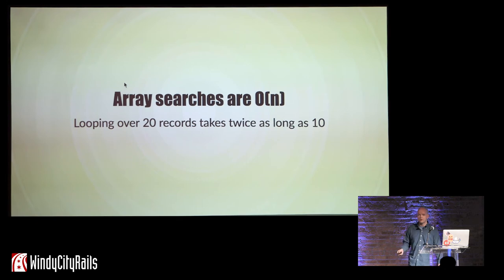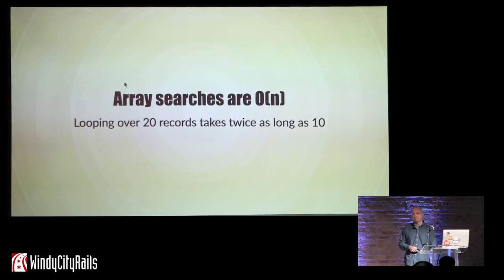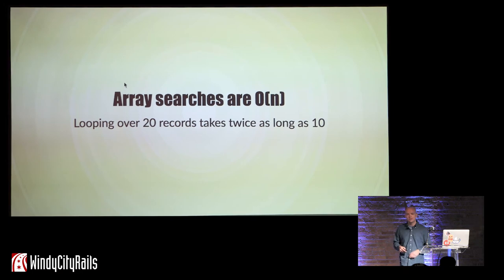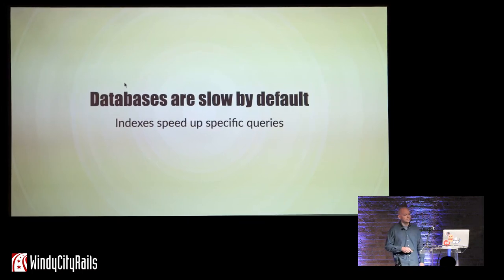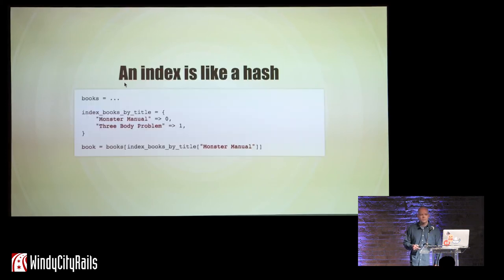Array searches are linear — it takes twice as much time to loop over 20 elements as it does to loop over 10. This is the source of that problem where as your database grows, it gets slower and slower. That indicates that we're probably looping over more and more records. So databases are slow by default, and we have to intentionally speed them up by adding indices.